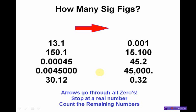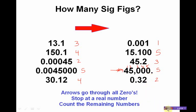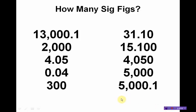Test yourself on these — how many significant figures do you have? Pause the screen and wait for my answer. The number of significant figures now revealed. The one I want to point out is this one: 45,000 with a decimal place. That means my arrow is coming in from the left, and I would count 1, 2, 3, 4, 5 significant figures.